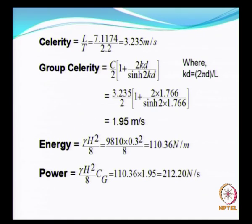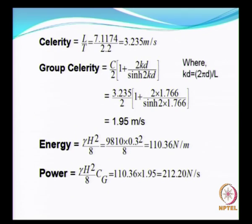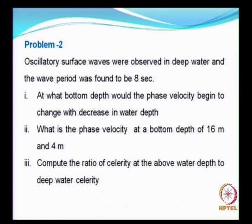Energy is γH²/8. γ is given in terms of Newtons and wave height is 0.3 meters, so you can get the energy per unit crest width — that is the definition of energy. Similarly, power is energy multiplied by the group celerity, which is already calculated, so the product will be your power. It is quite straightforward in dealing with these variables, which you need to calculate for solving problems related to maritime structures.